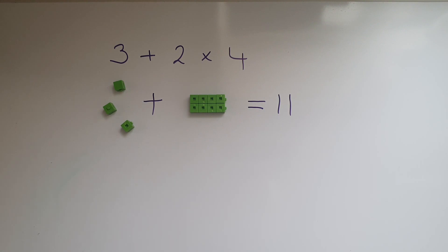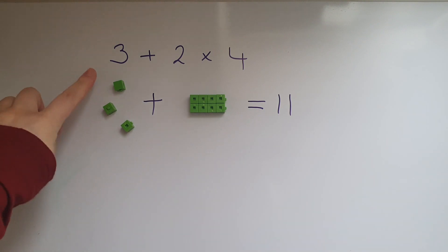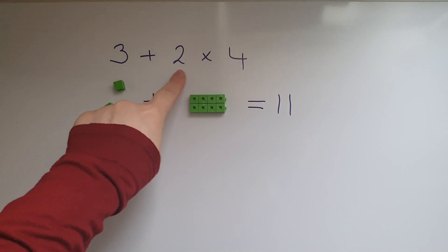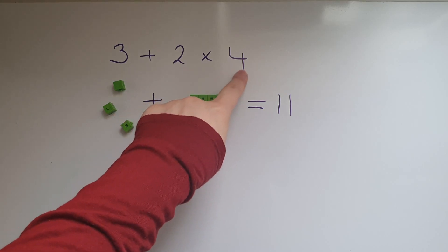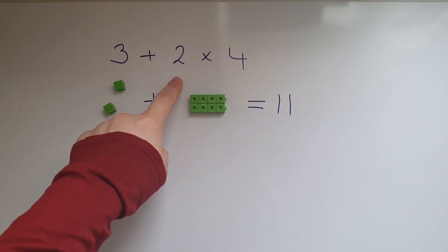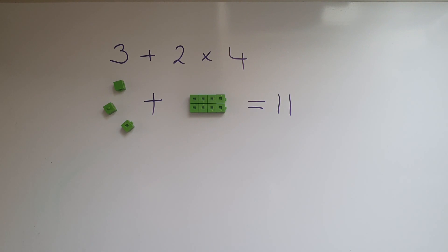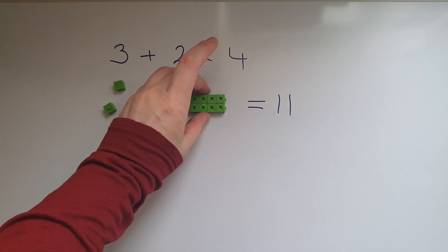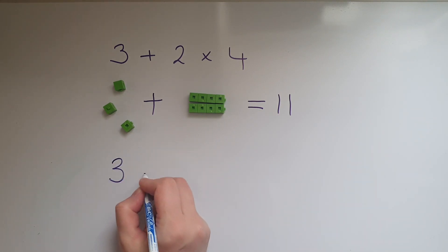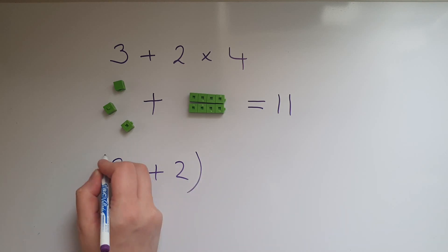Could it have been 5 add 2 first? No, because 2 times 4 — when you've got multiplication it means 'lots of'. So 2 lots of 4, and that means we cannot separate the 2 from the 4 unless we have it in brackets.